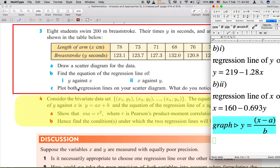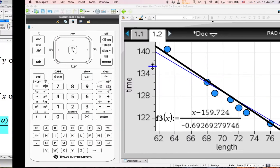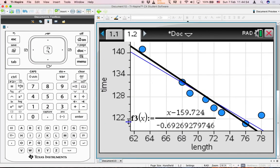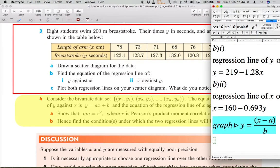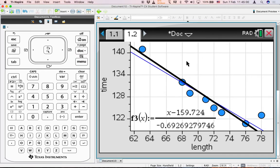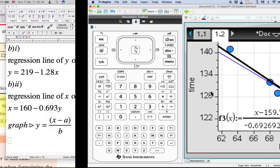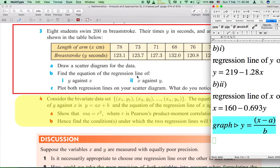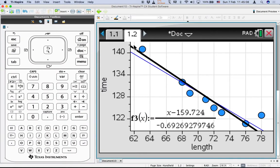And after that take a look at part C. Plot both regression lines on your scatter diagram. So your part should show in this. And what do you notice? We notice that the black line which is regression line of X against Y is steeper than the regression line of Y against X.